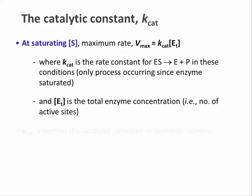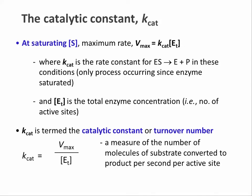Kcat is called the catalytic constant or turnover number, and it's a neat way of normalizing enzyme activity. It tells us literally how many molecules of substrate are turned over by a single active site per second, assuming substrate is at saturating concentrations.